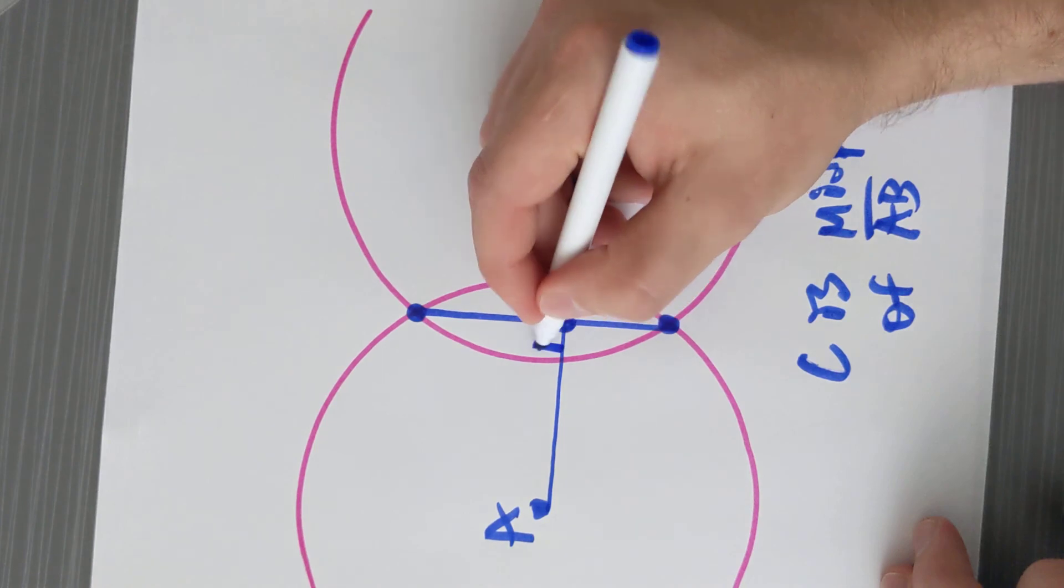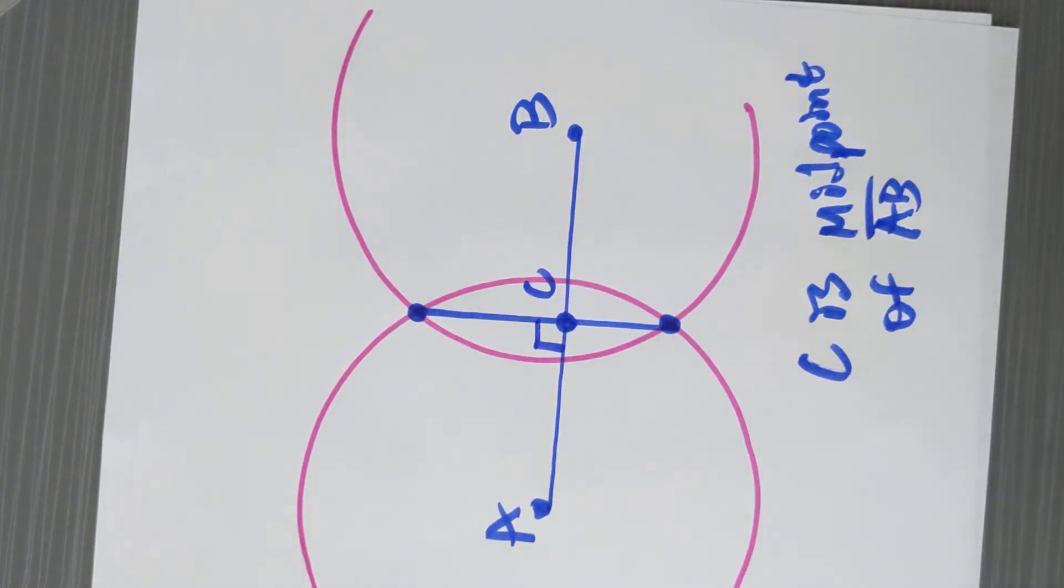We also know that this segment is perpendicular. So this is a perpendicular bisector. So we cut it in half, and we made a right angle. Two for one.